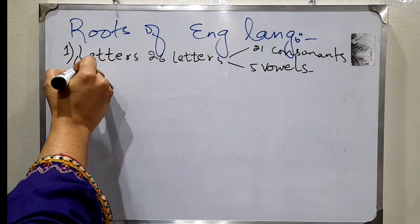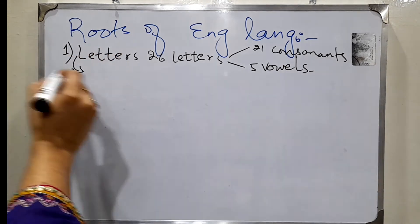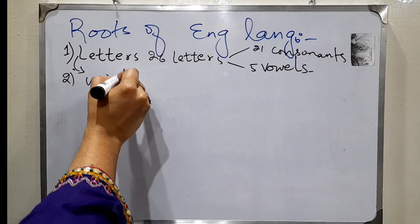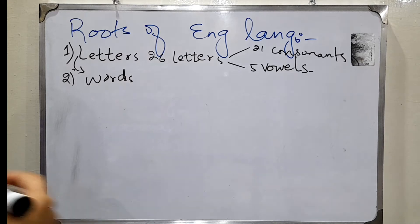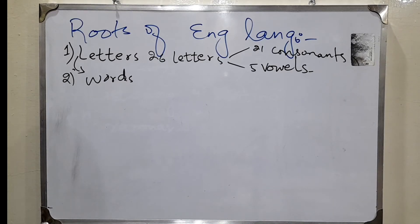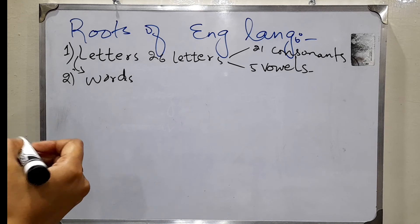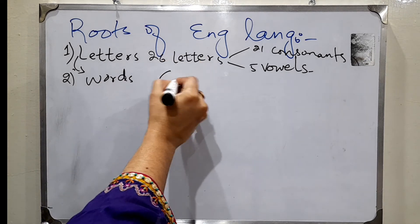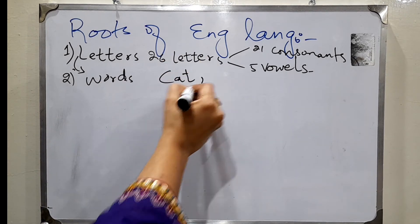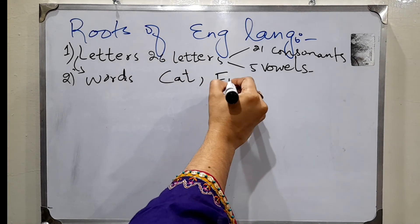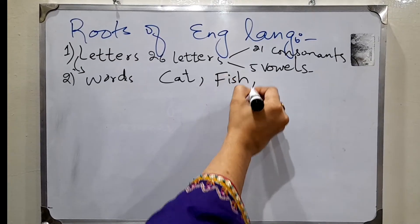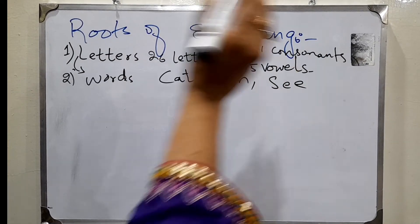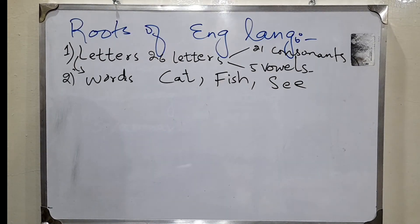Number 2: with the help of letters we can make words — two-letter words, three-letter words, four-letter words. For example: cat, fish, sea. These are three-letter and four-letter words.